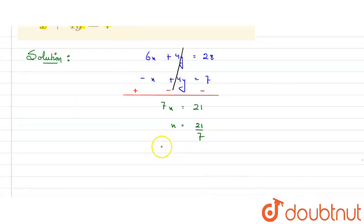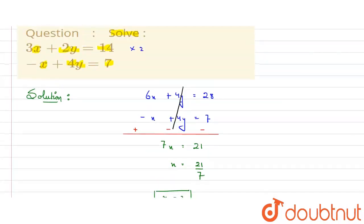7 multiplied by 3 is 21, so x value will be equal to 3. We have got the value of x, that is 3.